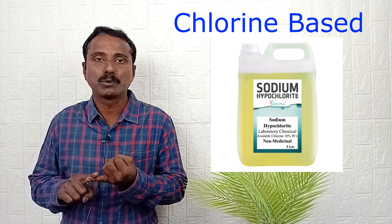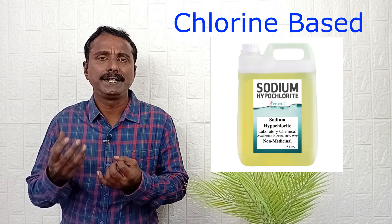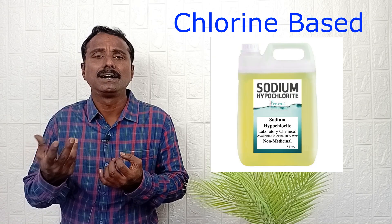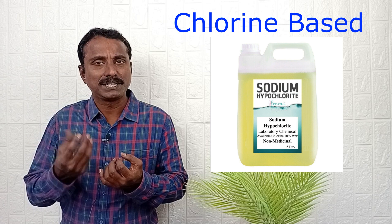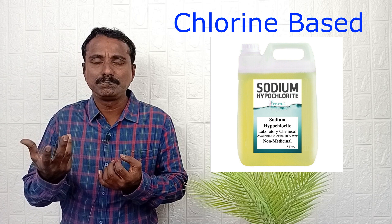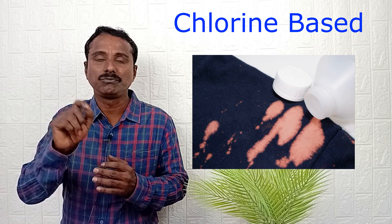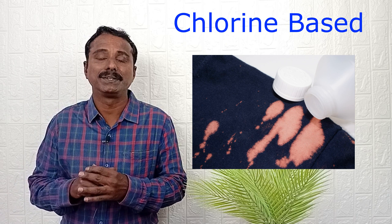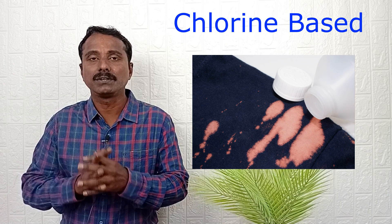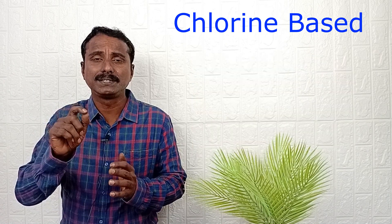In case of chlorine-based bleaching material, the example is sodium hypochlorite. It is a powerful bleaching material, price also cheap, but it is unsafe. It is not suitable for color fabrics. We can use it only for white color fabrics, even with more careful formulation.